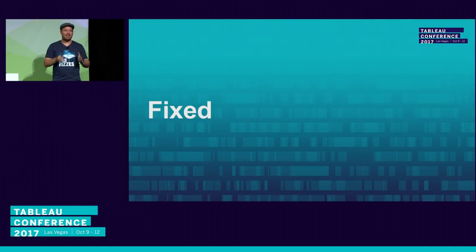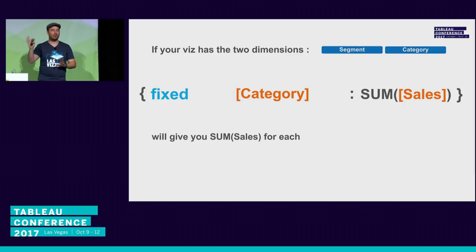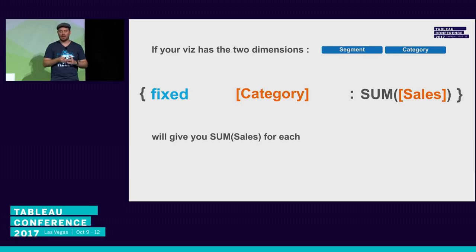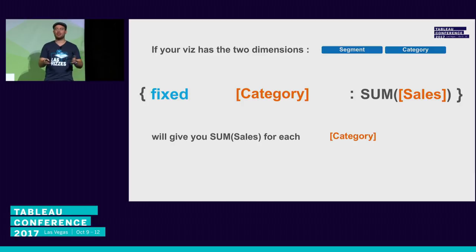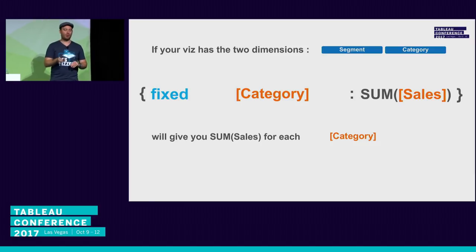Let's start with FIXED because it's the easiest to understand. Imagine a visualization with segment and category as two dimensions — that's the viz LOD. If you write the calculation FIXED category: SUM(Sales), this gives you sum of sales for each category. Fixed is very specific: you say exactly what you want, ignore everything else, just use this. That is the behavior of fixed — it does whatever you want it to do.